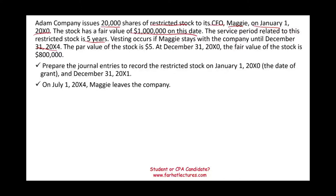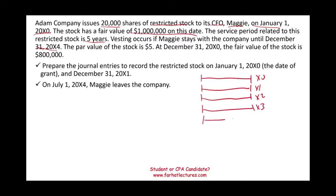Let's illustrate what we are given here. We're looking at a time period X0, X1, X2, X3, and X4 — those are the five periods. We granted the options at X0. Maggie has to stay all five years, and if she stays, she will get 20,000 shares of the company's stock guaranteed. We don't know what the value will be at that point, but the value today is a million dollars.